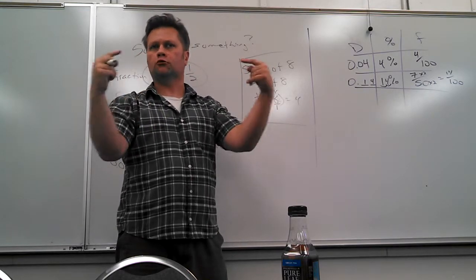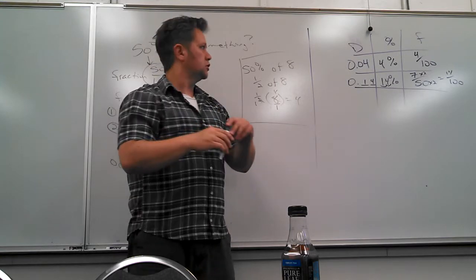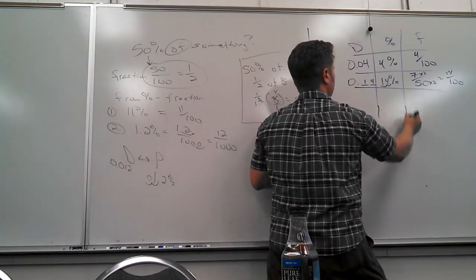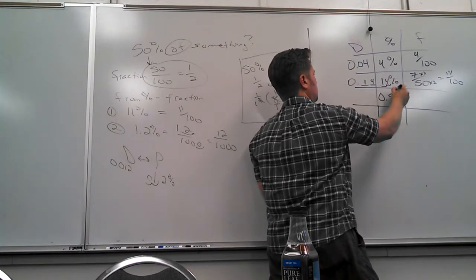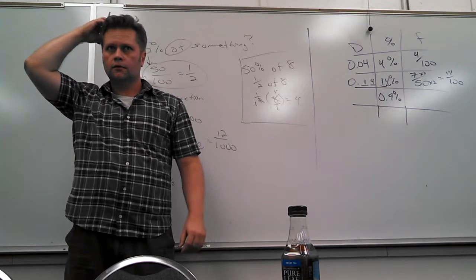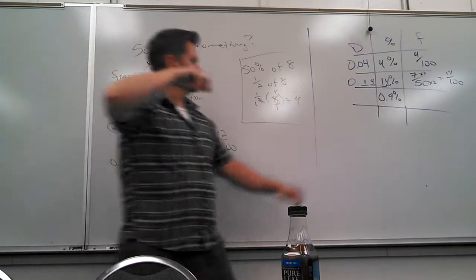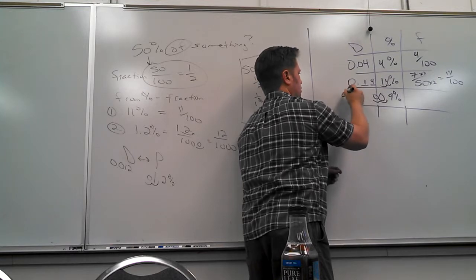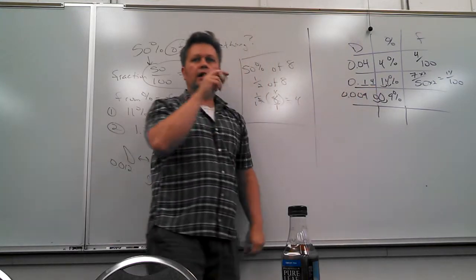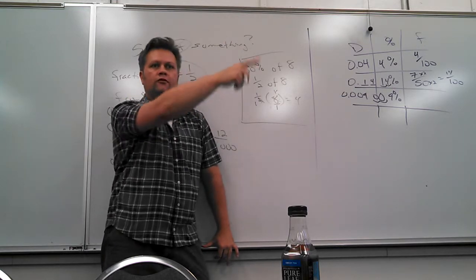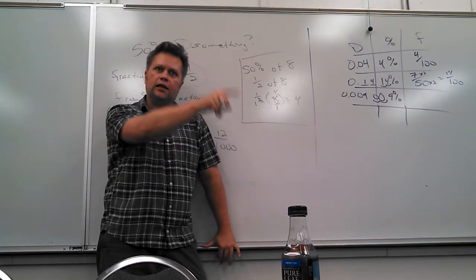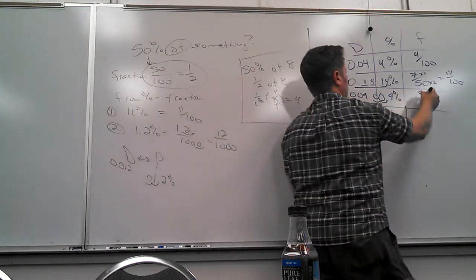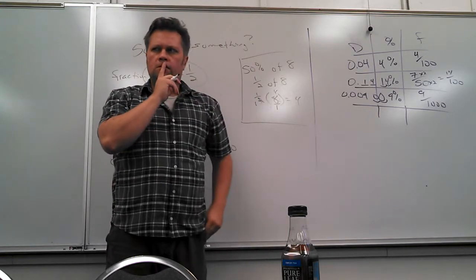Everything has to agree with each other. Now, what about 0.9%? Which way do you want to go? Take it from percent to decimal — you've got to move it over once, twice — so it'll be 0.009. That's a much better way to go because it's easy to go from decimal to fraction. What place is that 9 in? Tens, hundreds, thousands — so it's 9 over 1000.